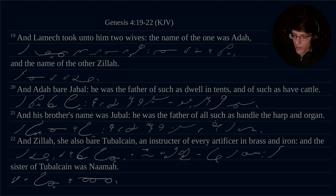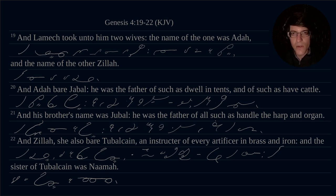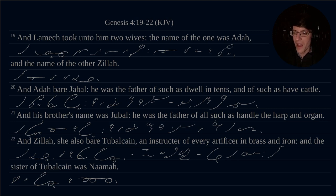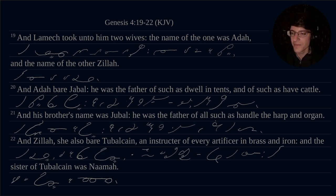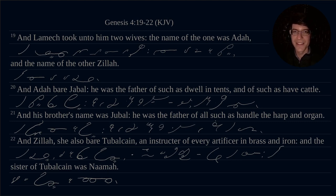All right. That concludes today's drill. This is Genesis 4, 19 through 22. I hope this was helpful to you. If you liked the video, please click the little like button below the video. Share it with any of your fellow shorthand lovers. I would love to have some critiques to make sure I'm thinking about the stroking and phrasing correctly. Subscribe to the channel if you want more Gregg shorthand content. I hope you have a wonderful day. Go out and practice some shorthand. Bye-bye.